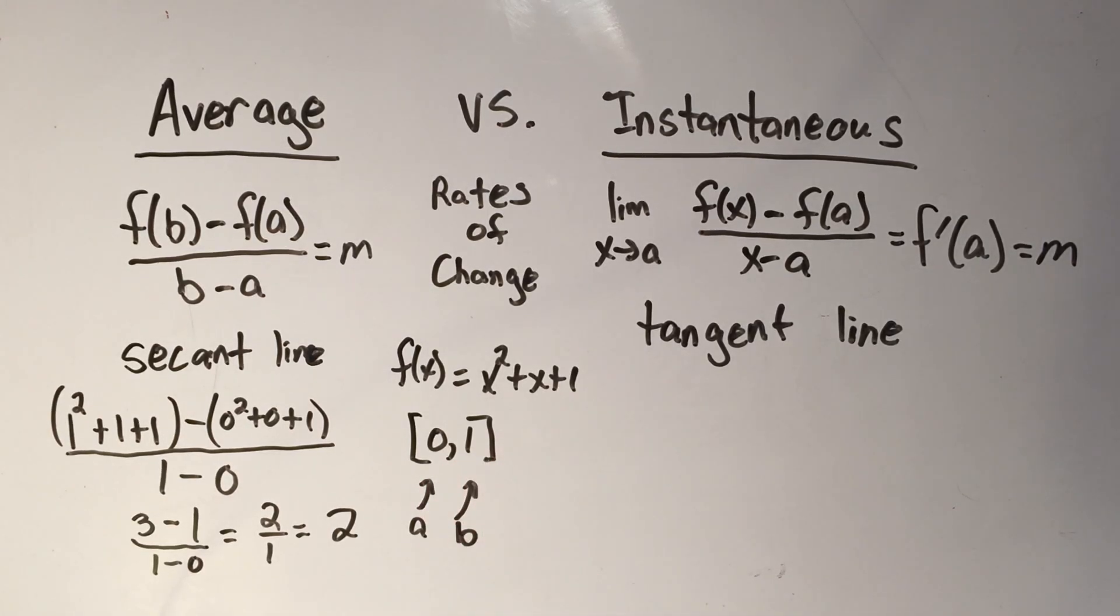It's just the slope between these two points. And if you like the y2 minus y1 over x2 minus x1 better, you could just think of it just like that. So this would be our average rate of change.